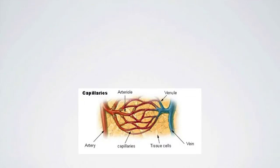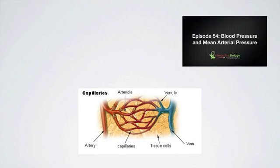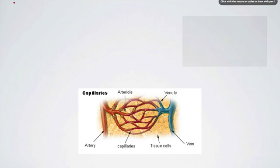We've been looking at the circulatory system and we've shown that the blood leaves the heart and then it goes via the aorta to the arteries, then to the capillaries, to the venules, to the veins, and then to the vena cava and ultimately back to the heart. If you need a review of that, you can check out episode 54. Today we're going to look at what happens between the arterioles, the capillaries, and the venules — showing an artery leading to the arteriole, then to the capillary bed, then via the venules to the vein.